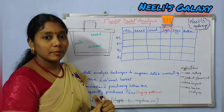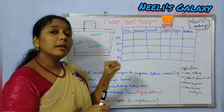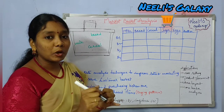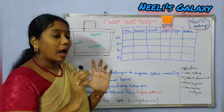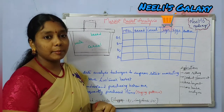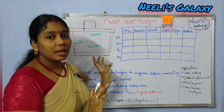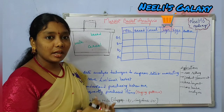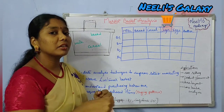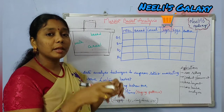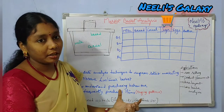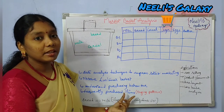If you consider customer two, whenever he goes to a store, he used to buy bread along with milk — milk along with bread. So in that customer's basket, milk and bread are frequently purchased together. By analyzing these baskets, we can understand customer buying patterns and buying behavior — which items a customer buys, and which other items they tend to buy along with them.